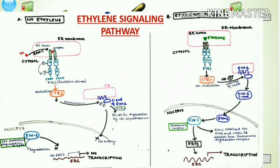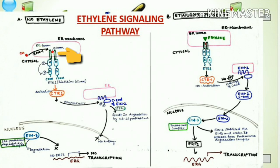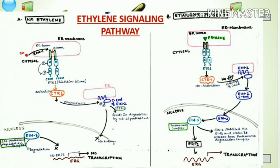Now we start with the Ethylene signaling pathway. The first case is the absence of Ethylene. The ETR1 receptor is in the ER and the receiver part is in the ER lumen. This receptor has a histidine kinase domain, because it follows the two-component signaling pathway — the histidine domain is phosphorylated, then it phosphorylates the aspartate domain — the same mode of action as in the cytokinin signaling pathway, though the overall pathway differs.